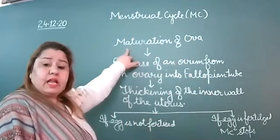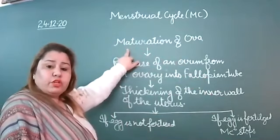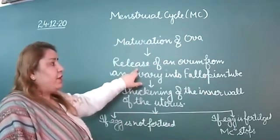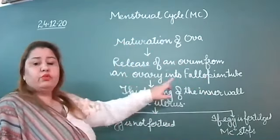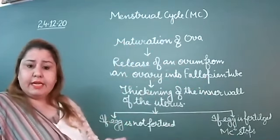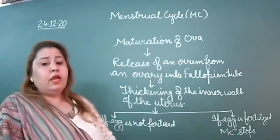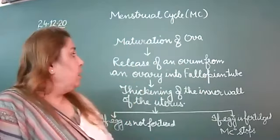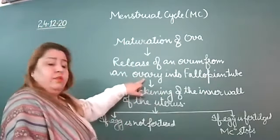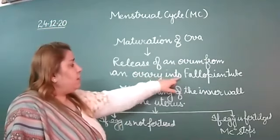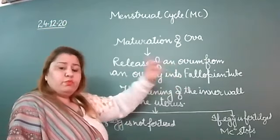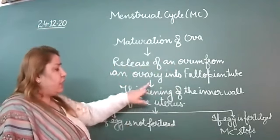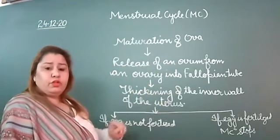At the time of maturation of the ovum, there is release of an ovum from the ovary into the fallopian tube — we already discussed this in the reproduction chapter. When the ovum is released into the fallopian tube, there is thickening of the inner wall of the uterus.